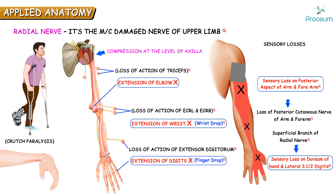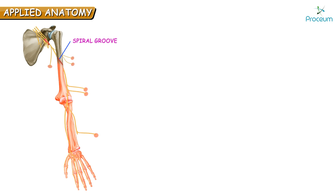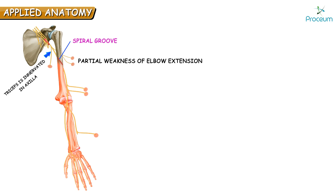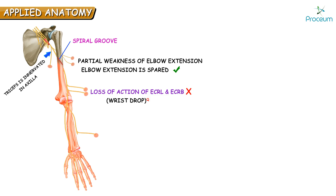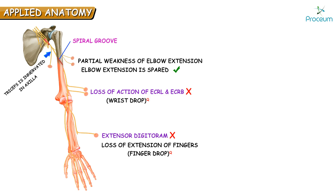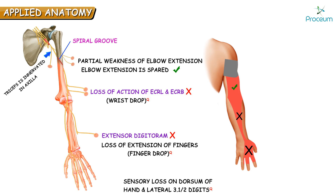Damage to the radial nerve at the level of the spiral groove leads to only partial weakness of elbow extension, as most of the triceps was innervated when the nerve was still in the axilla — so elbow extension is usually spared. There is wrist drop due to involvement of extensor carpi radialis longus and brevis, loss of extension of fingers due to involvement of extensor digitorum, and sensory loss on the dorsum of the hand and the dorsum of the lateral three and a half digits.